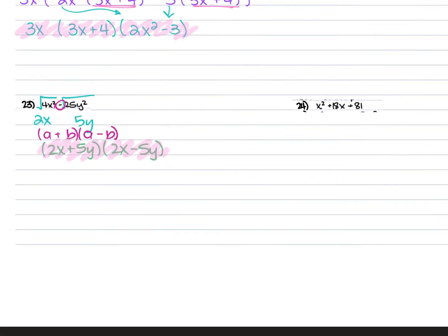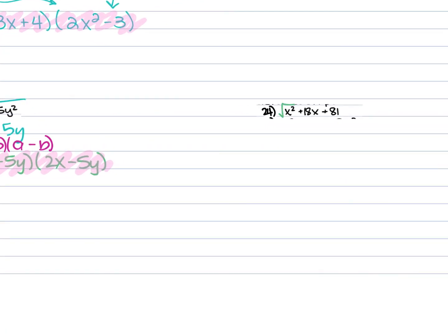For number 24, we have x² + 18x + 81. It's a trinomial, so check if it's a perfect square trinomial. The square root of x² is x, the square root of 81 is 9. Since the middle term is positive, check if 2 times x times 9 equals 18x — it does. Use the formula (a + b)², where a is x and b is 9. Final answer: (x + 9)².